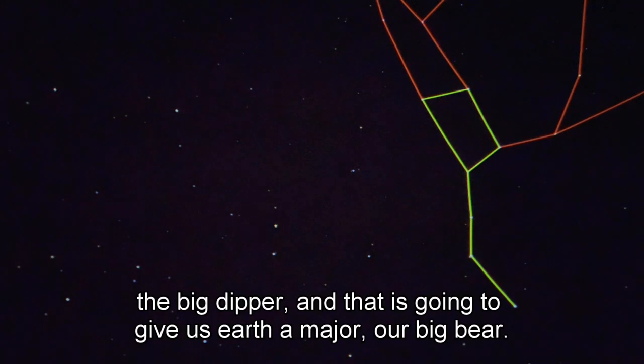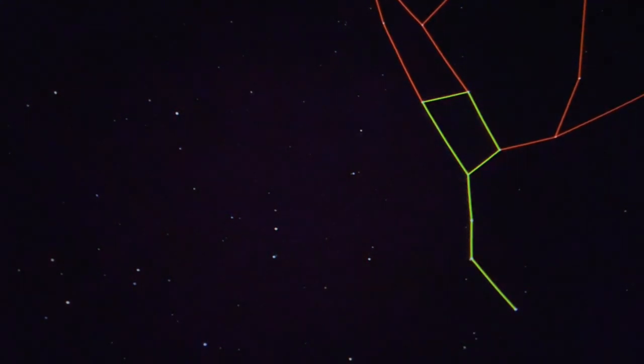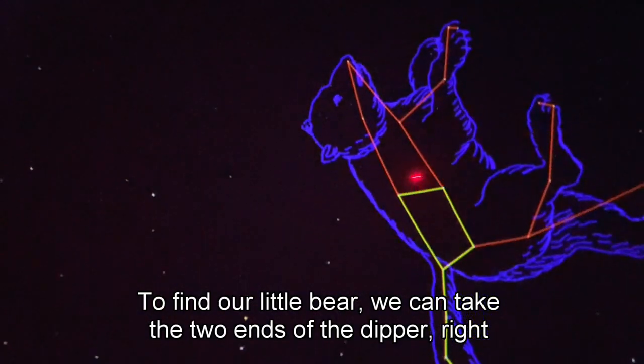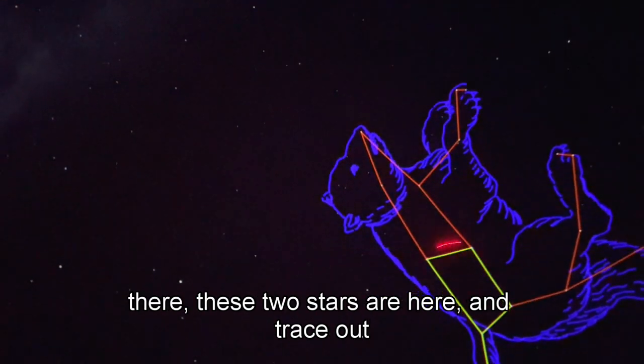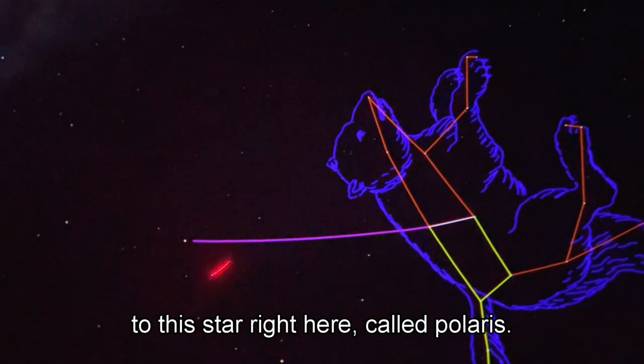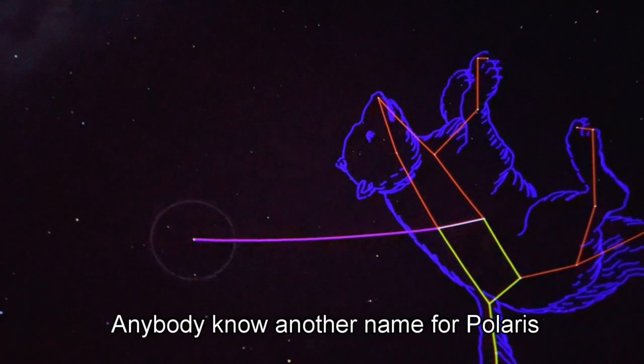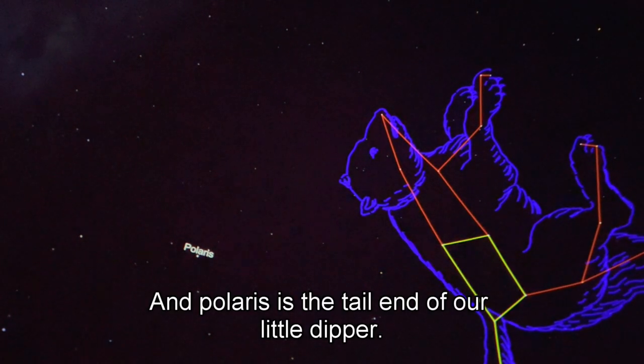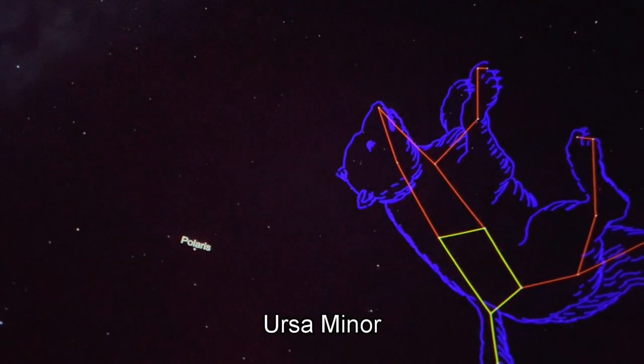We can just add a couple more lines onto the Big Dipper and that is going to give us Ursa Major, our big bear. To find our little bear, we can take the two ends of the dipper right here, trace out to this star right here called Polaris. Anybody know another name for Polaris? North Star, that is correct. Polaris is the tail end of our little dipper, Ursa Minor.